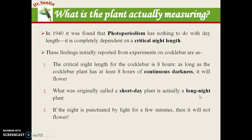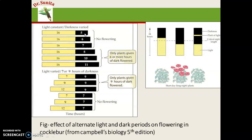It is termed a long night plant because if the night period is punctured by light — even a few minutes of light interrupting an 8-hour continuous dark period — then this plant will not flower. So the critical period is the night length. According to this experiment, maintaining a 16-hour light period is sufficient to discover the flowering response.